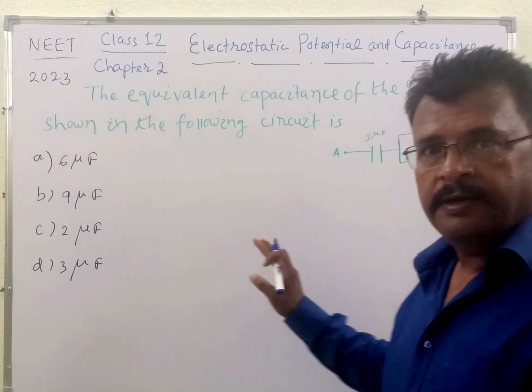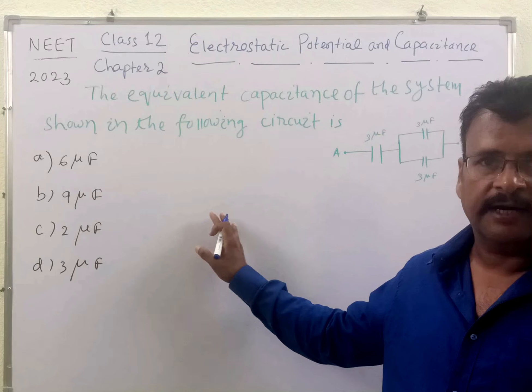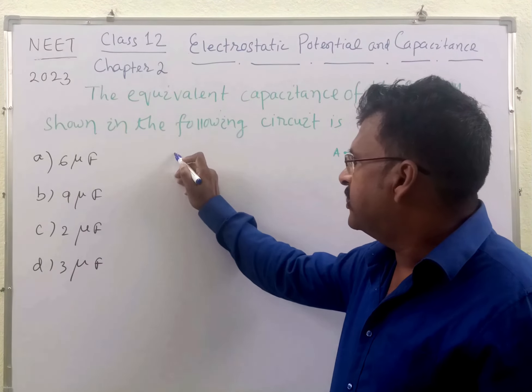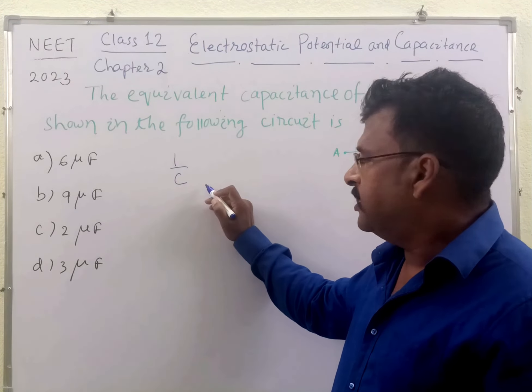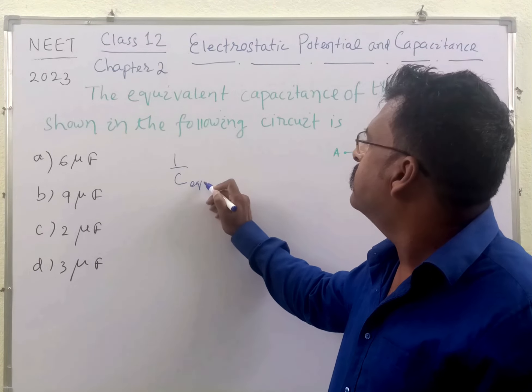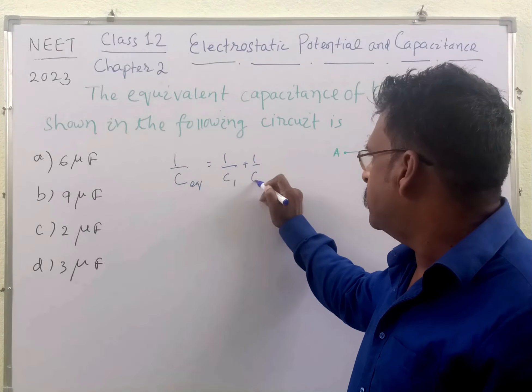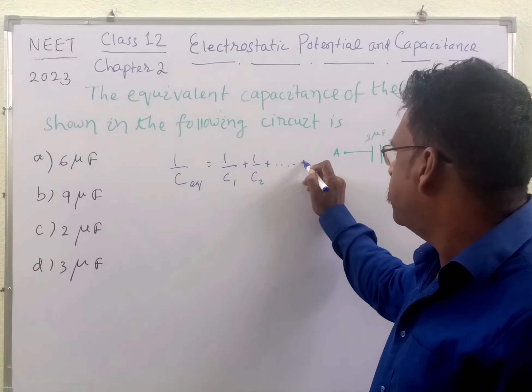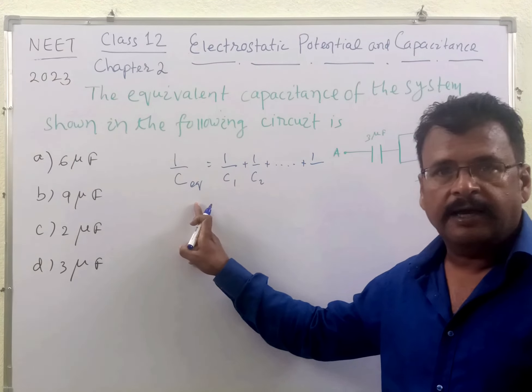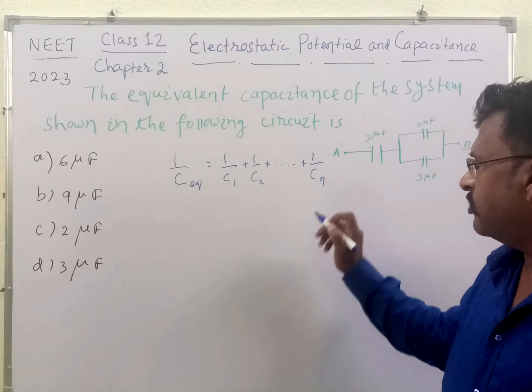We know when capacitors are connected in series, then their equivalent capacitance becomes 1 by C is equal to 1 by C1 plus 1 by C2 plus, suppose N capacitors have been connected in series, then this becomes 1 by Cn.